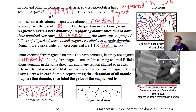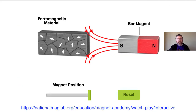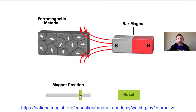If you put a ferromagnetic material in a strong external B field, it aligns the domains in the same direction, and many will remain aligned even after the external B field is removed. Here's an applet that shows exactly that — this represents the alignment or orientation of each domain, and notice they're aligned very randomly. I'm going to take this bar magnet, which provides an external magnetic field, and move it close to the ferromagnetic material.